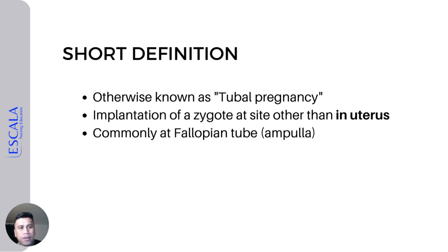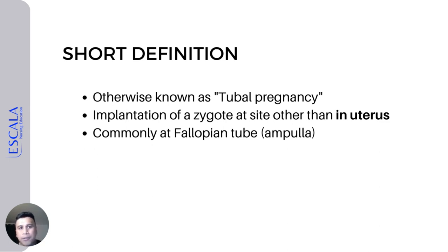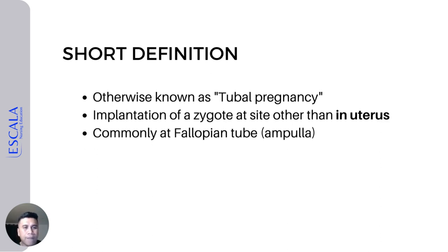Ectopic pregnancy can also implant on other parts of the female reproductive organ, like the cervix and the ovary. In a very rare case, it can also implant in the intestine — what we call abdominal pregnancy in the obstetric textbook. However, the most common site of ectopic pregnancy is in the ampulla of the fallopian tube.